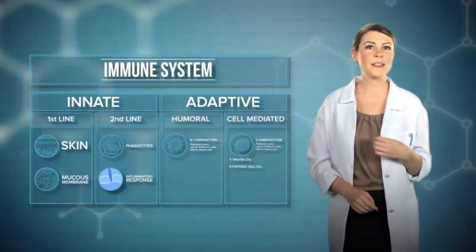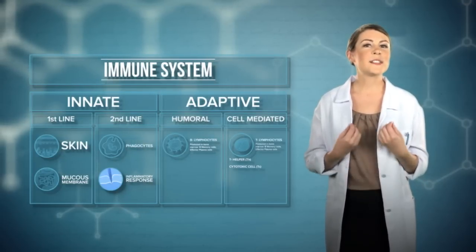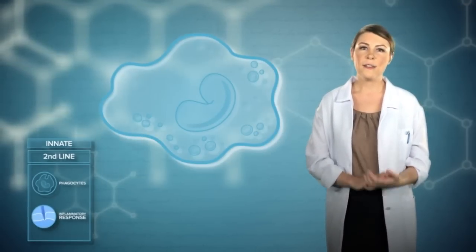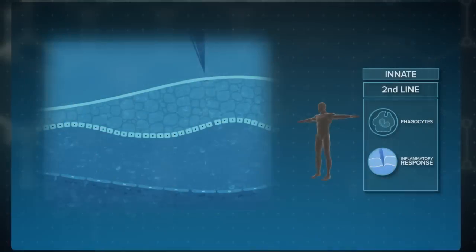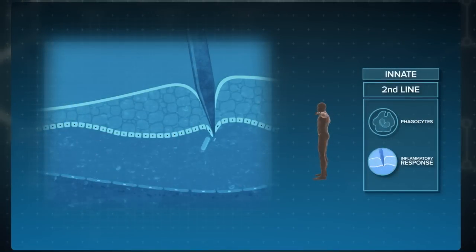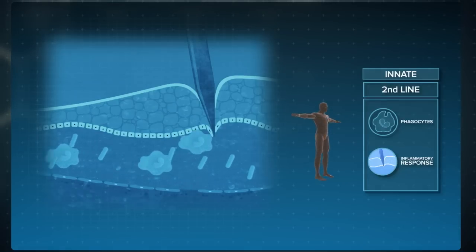For those that penetrate the first line of defense, there is the second line of defense, the phagocytes. When cells get injured, they release histamine, causing increased blood flow to bring clotting agents and white blood cells, such as phagocytes, to the area of infection.